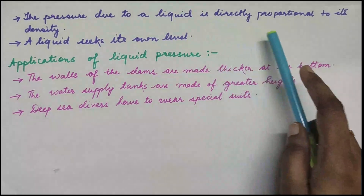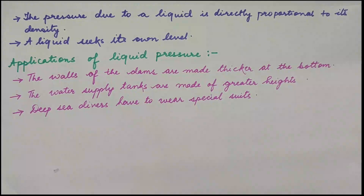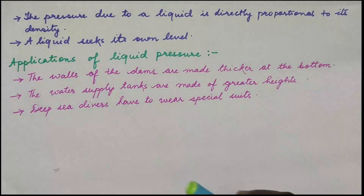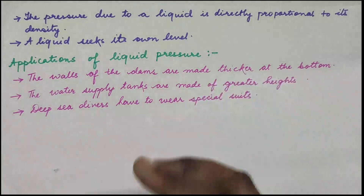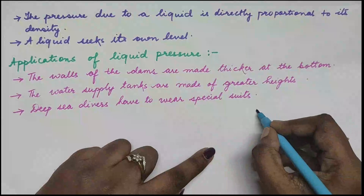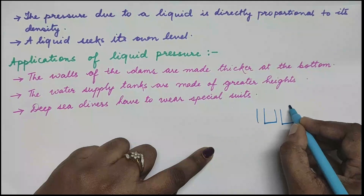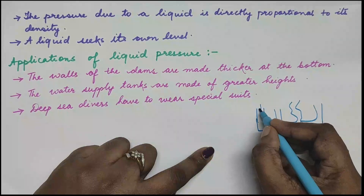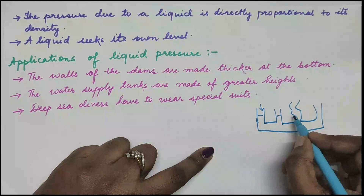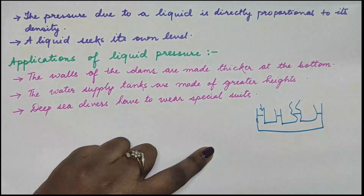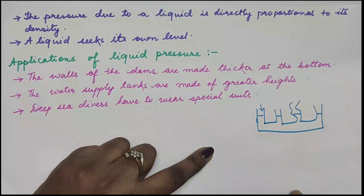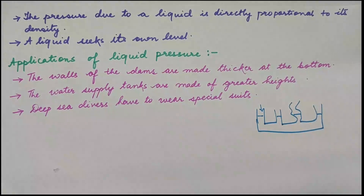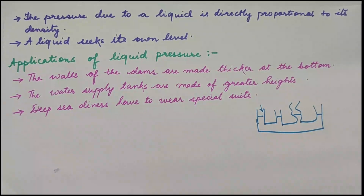The pressure due to a liquid is also directly proportional to the density of the liquid, as mentioned earlier. Additionally, a liquid seeks its own level — if you have different shapes and sizes of tubes connected together and pour water from one end, you will see that the water level in all the different tubes will be equal. So we say that liquid seeks its own level.